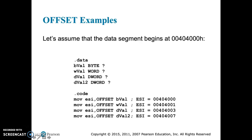You can see, we're assuming here that this data segment starts, as you can see at the top, at 004000h. So again, the BVAL offset is 0. So the WVAL offset is 1, 1 byte.